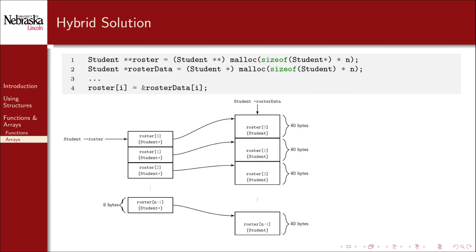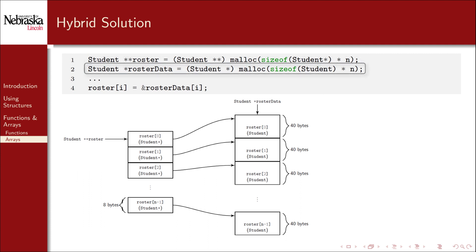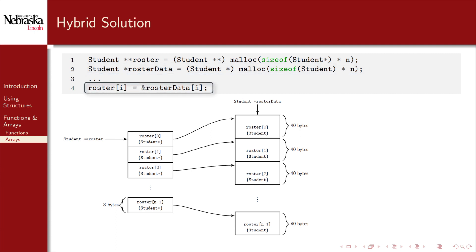Here's the hybrid approach, where we have an array of pointers to structures, but each one points to a structure in a contiguous array. To achieve this we would have two calls to malloc — one for the array of pointers and one for the contiguous array of structures. We then need to go through and make sure that each pointer is pointing to the proper spot using a for loop.